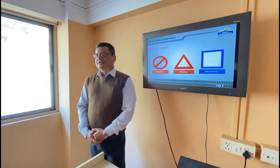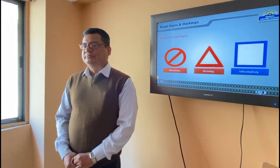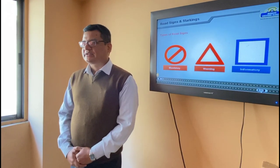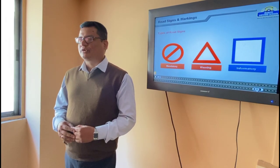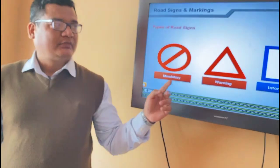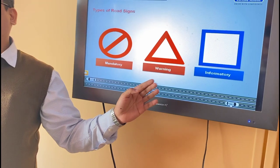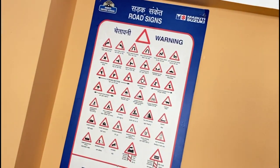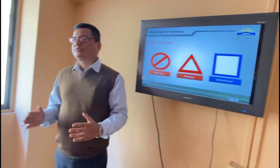We will talk about road signs. We will be able to learn road signs because we have three types of road signs. We have mandatory signs, warning signs, and informatory signs. We need to learn the warning signs, and we have mandatory and informatory signs — there are three types of road signs.